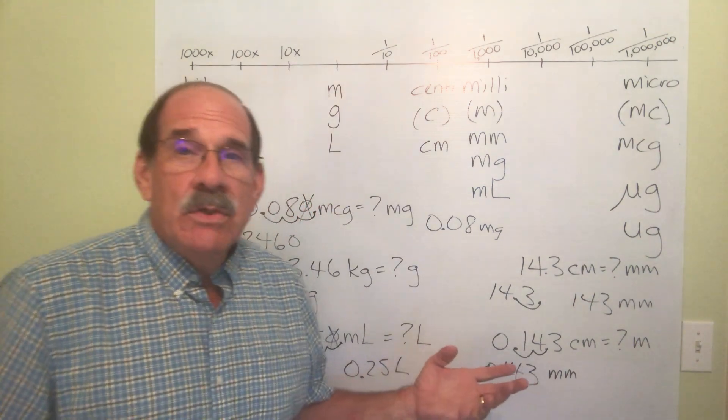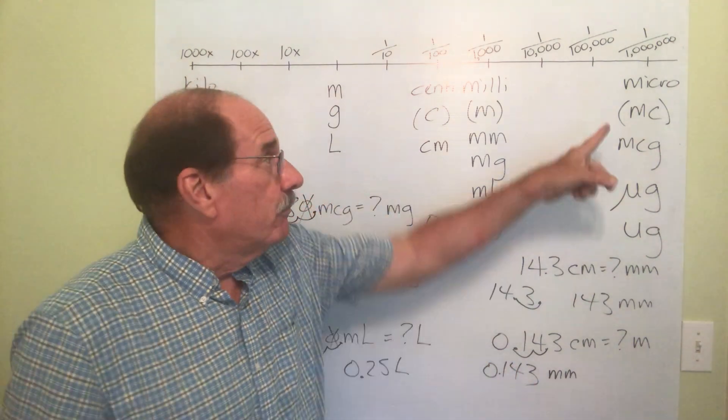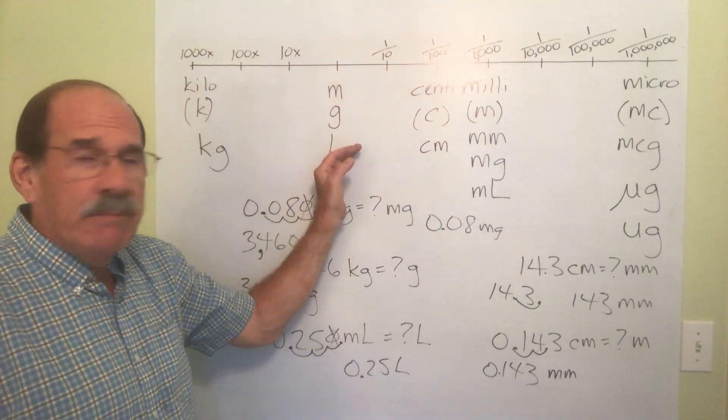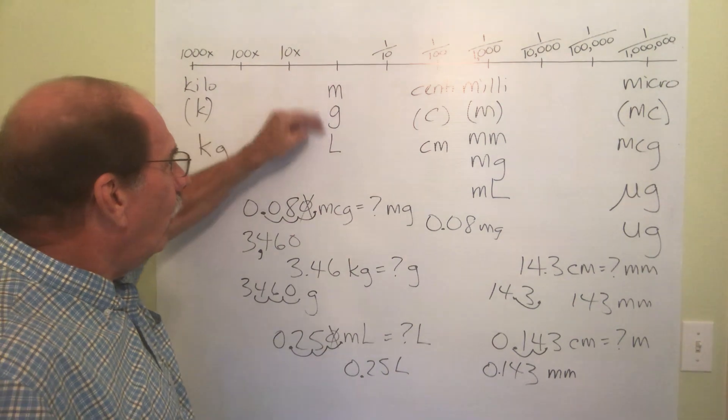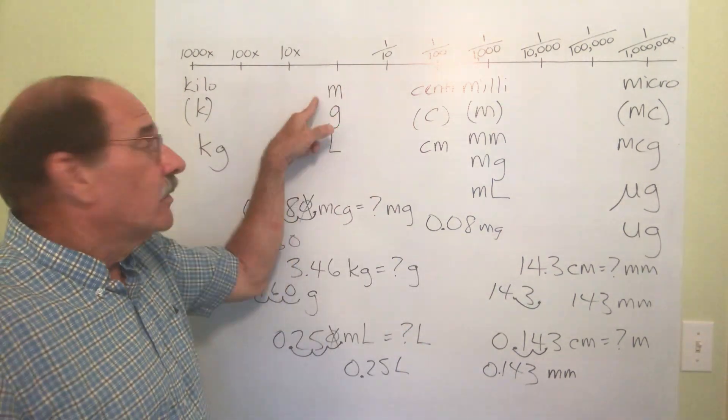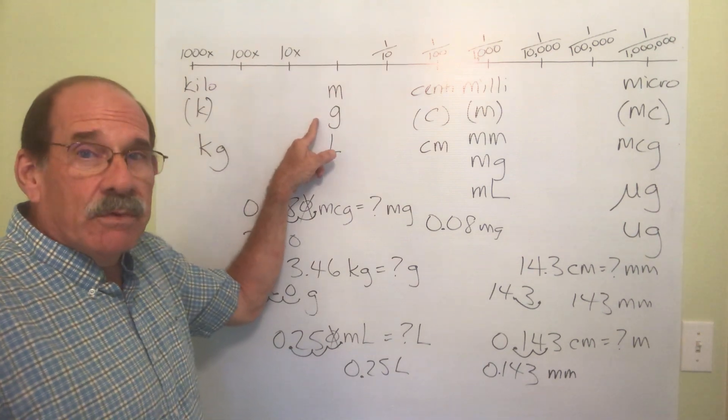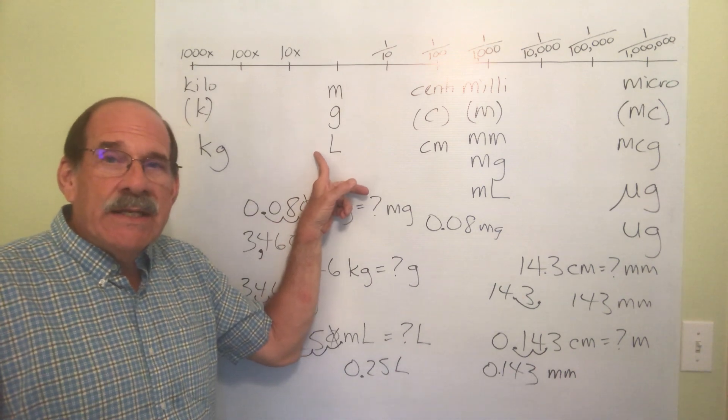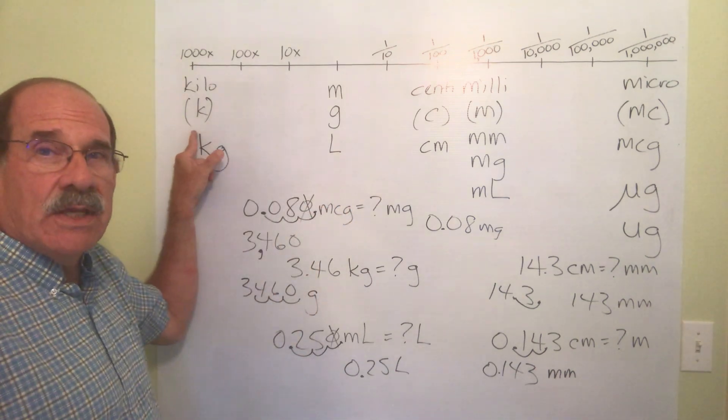Well, you need to, number one, memorize this chart. The main ones here, meter, gram, and by the way, you can put liter. The order of these three doesn't matter. That's just the three basic measurements. One for length, one for weight, and one for liquid volume measurements. One thousandth of any of those is kilo. That's three jumps to the left.